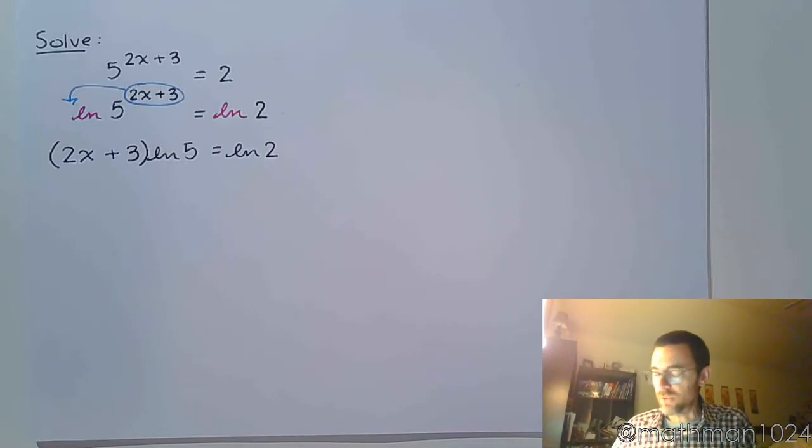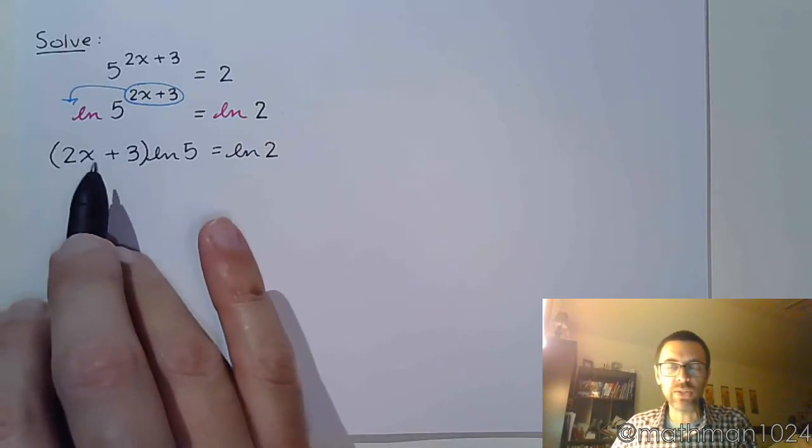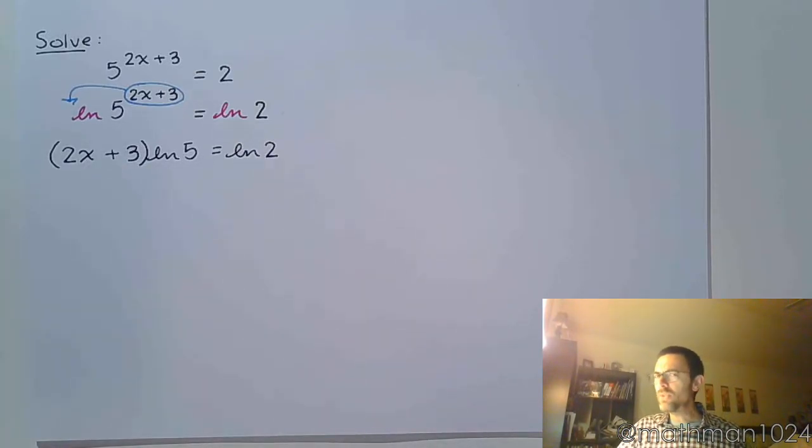So we've got a couple ways of solving this. You could divide both sides by the natural log of 5 and then go through the process of solving for x. If you do that, it's going to look kind of messy. Instead, and so that we can do well in the next examples coming up, I want us to go ahead and distribute.